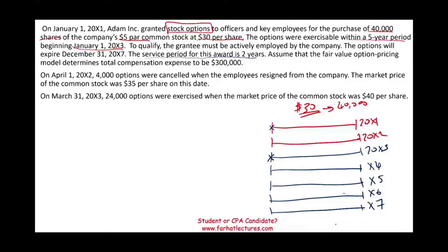The service period for this award is two years, meaning the employees must work for the company for two years — starting January 1st — to earn the right to exercise the options. That's why the first two years are marked in red. The fair value option pricing model determines total compensation expense to be $300,000. We expense that $300,000 over the two-year service period, so $150,000 every year.